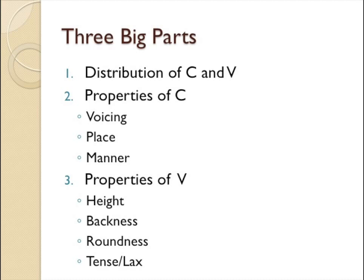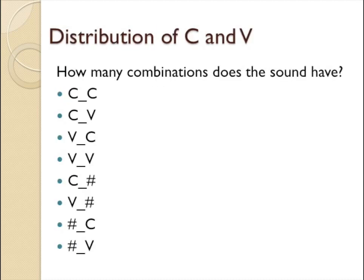Now let's start with the first one: the distribution of consonants and vowels. Assuming you have two sounds to consider right now, what you have to do is look at the whole column, which means you have to look at the sounds that go right before and right after. So if you have two sounds, you only have two columns to consider. You want to look at the combinations of consonant and vowel with the sound that you're investigating. I've listed out all the possibilities of what can go before and after the sound — there are eight of them.